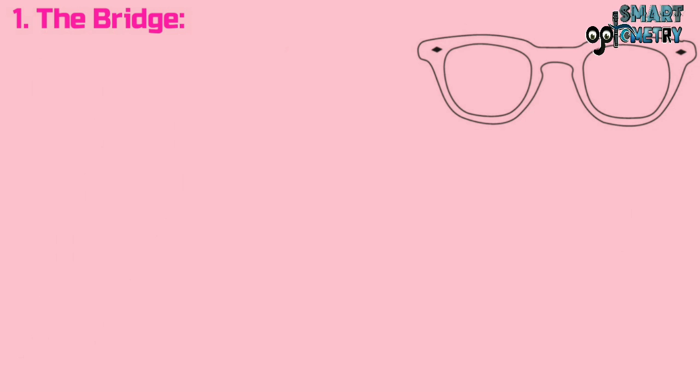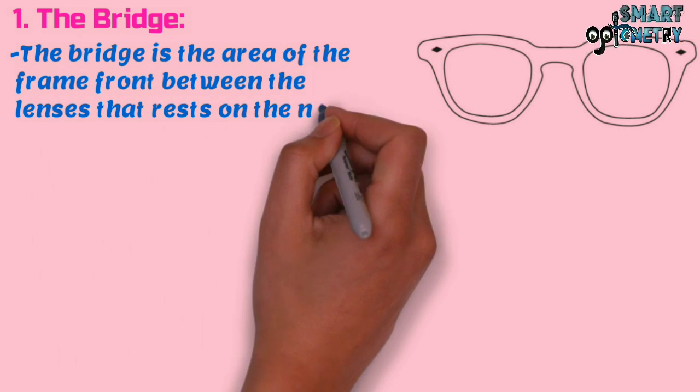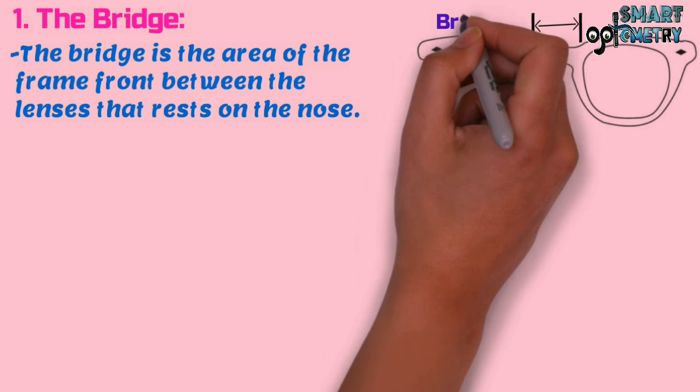One, the bridge. The bridge is the area of the frame front between the lenses that rests on the nose. Here in this figure you can see the bridge.